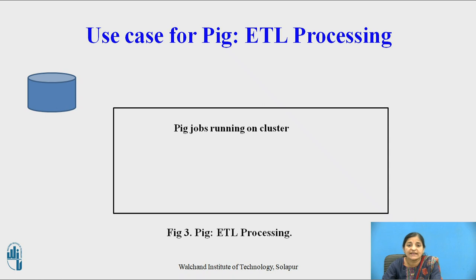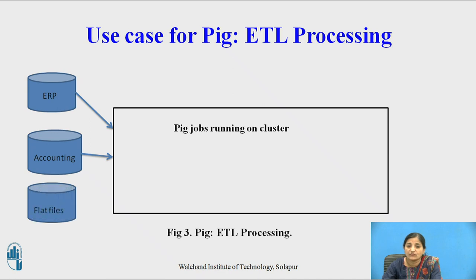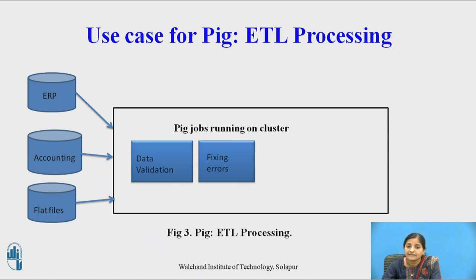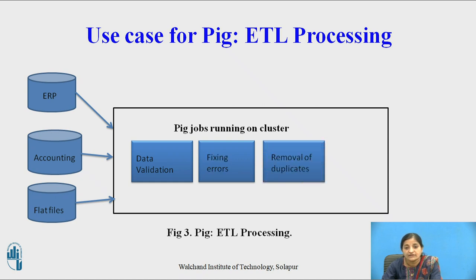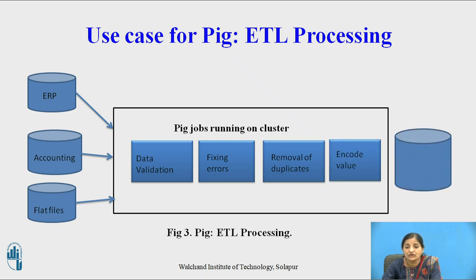'Pigs fly' means Pig processes data very quickly. Now let us see the ETL processing in Pig. Pig runs jobs on clusters: it collects data from multiple sources such as ERP systems, accounting sections, and flat files. Then it validates the data, fixes and debugs errors — removing all the noise — removes duplicates, and encodes the values. Finally, the clean data which is ready to be analyzed is stored in the data warehouse.